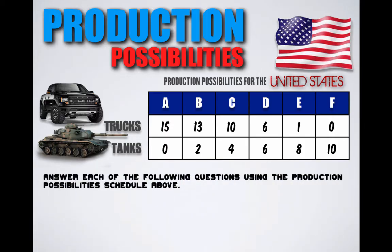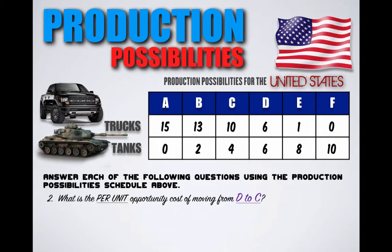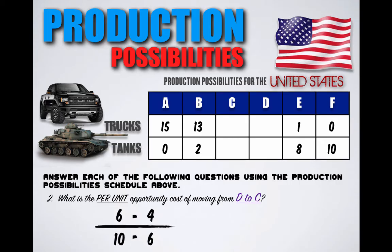Ceteris Paribus — answer each of the following questions using the production possibilities schedule above. Question 1: What is the opportunity cost of moving from combination A to combination B? When moving from A to B, the United States is decreasing its truck production from 15 trucks to 13 trucks, so the opportunity cost is 2 trucks. Question 2: What is the per-unit opportunity cost of moving from combination D to combination C? The United States may be shifting away from military goods toward a post-war economy, reallocating resources from tanks to trucks. Shifting from D to C decreases tank production from 6 to 4 units but produces 4 more trucks, so the per-unit opportunity cost is half a tank per truck.